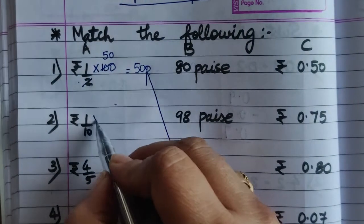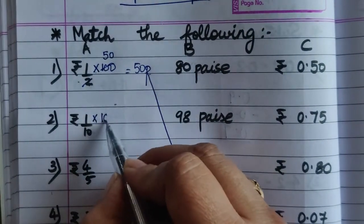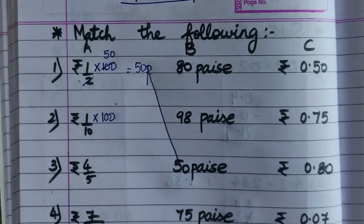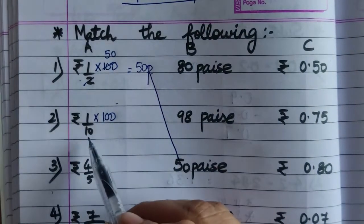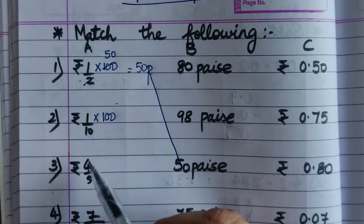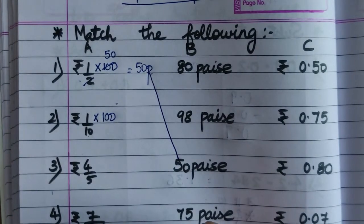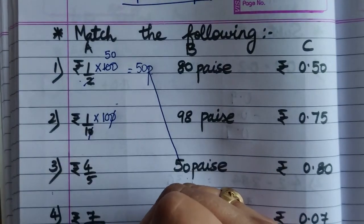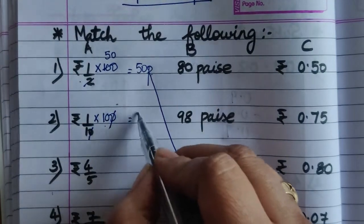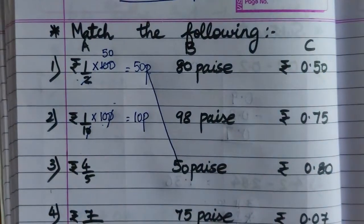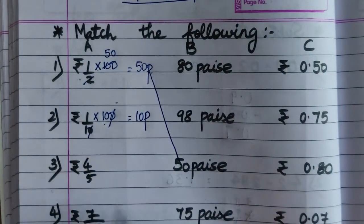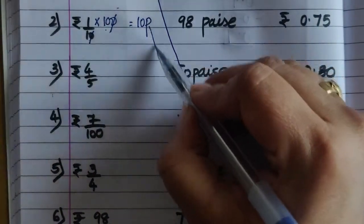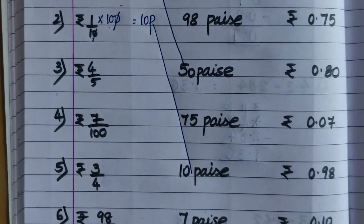दूसरा देखो: again 100 से multiply किया, rupees को पैसे में convert करना है — हर एक fraction को 100 से multiply करना है. यह 0 कट, यह 0 कट, बाकी बज़ गया 10 पैसे. यानि 1/10 means 10 पैसे, so हम 10 पैसे के साथ इसको match करेंगे.